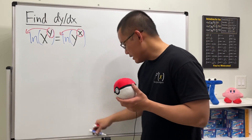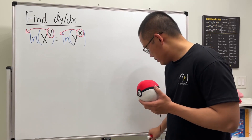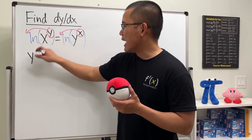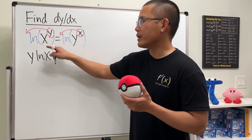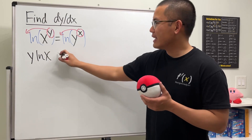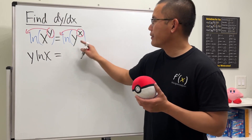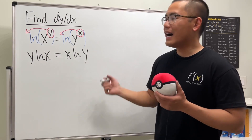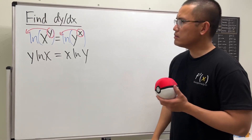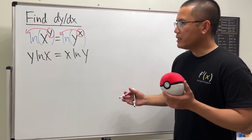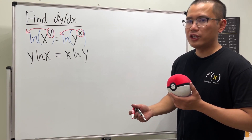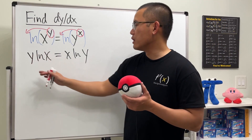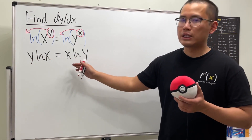When we do that, this is what we get: y times ln(x), that's equal to x times ln(y). From here, we can just do implicit differentiation, and we see we need to use the product rule on both sides.